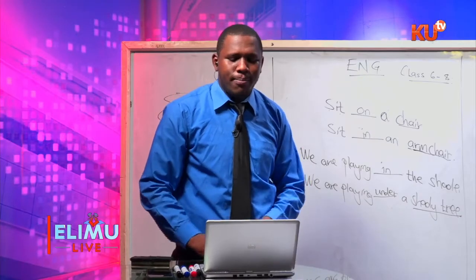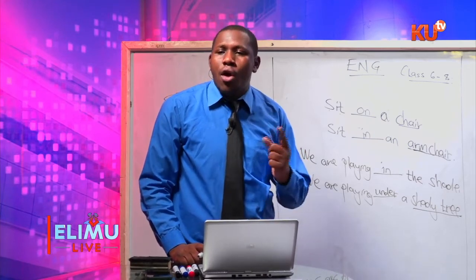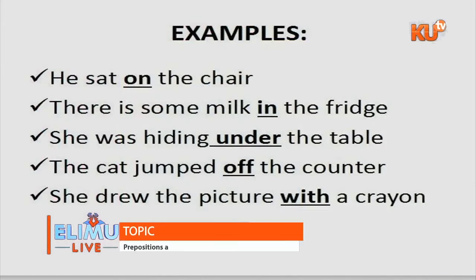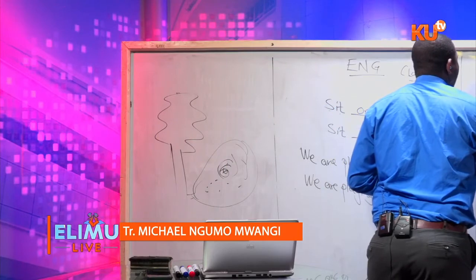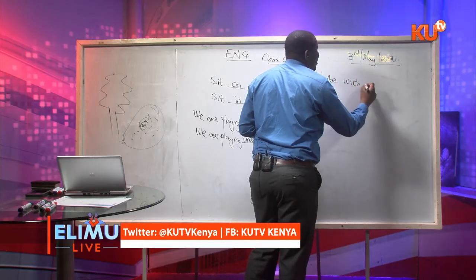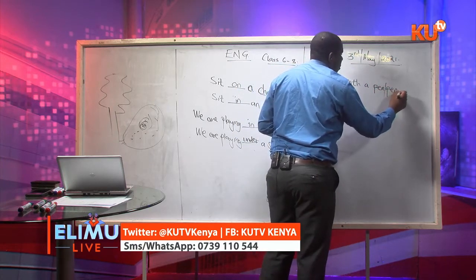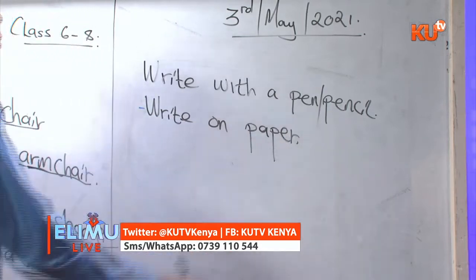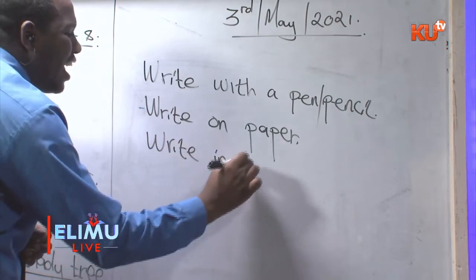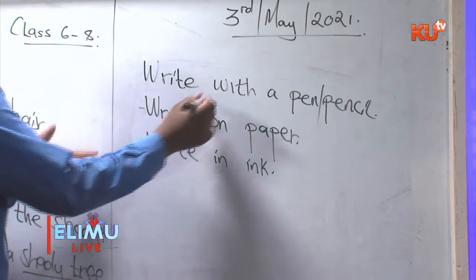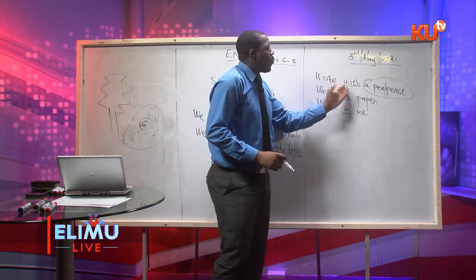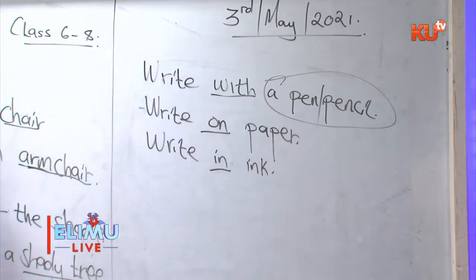More examples: there is some more milk in the fridge; she was hiding under the table; the cat jumped off the counter — that off uses a double F. She drew the picture with a crayon. For writing implements: you write with a pen or with a pencil, on paper, and in ink. The preposition changes depending on the noun used.